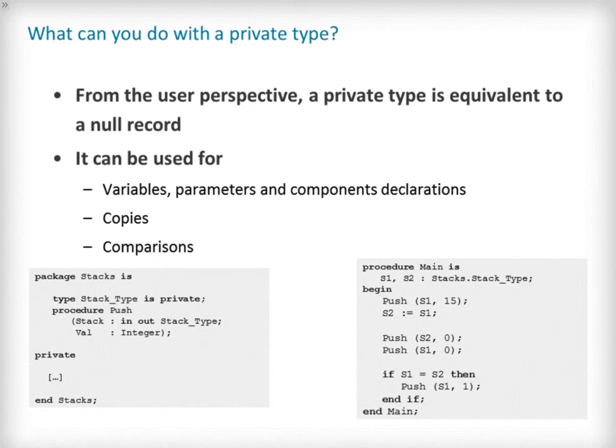The following example shows the package stacks declaring a private type called stack type and using it to type a parameter of the procedure push. The main procedure is the user of the package stacks and is able to declare stack objects using the private stack type, using them in calls to push, making assignments to them and in comparisons.